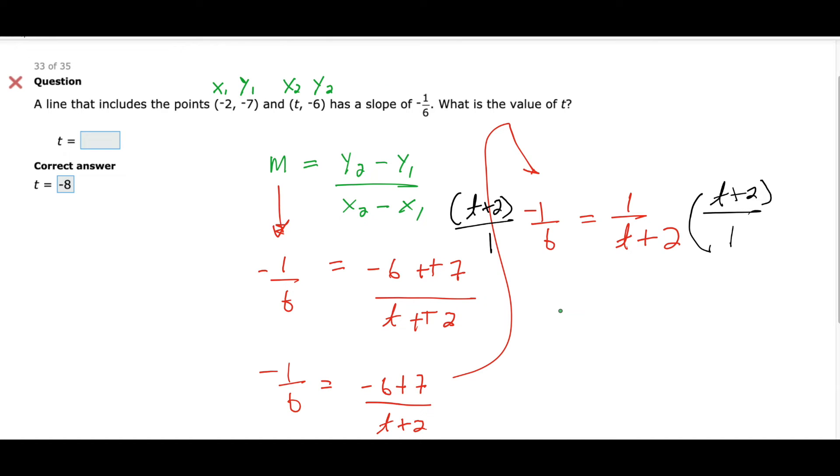What if the t's already on top? It's an easier problem. Okay. So then you go like that. Okay. And then what do you get on the left? -t minus 2 over 6. -t minus 2 over 6 equals 1.